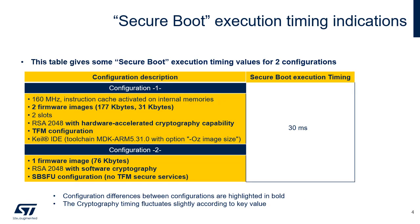This table gives secure boot execution timing values for two configurations. The common features for both configurations are Keil IDE, Toolchain MDK ARM 5.31.0 with minus OZ option, 160 MHz operation, instruction cache enabled on internal memories, two slots. Configuration one has two firmware images of 177 KB and 31 KB, RSA 2048 with hardware accelerated cryptography capability and TFM configuration. Configuration two has one firmware image of 76 KB, RSA 2048 with software cryptography and SBSFU configuration. These two different configurations lead to the same secure boot execution timing of 30 milliseconds.